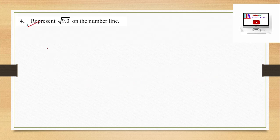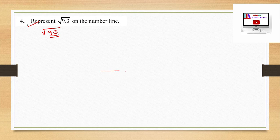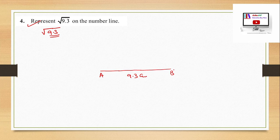Question 4: Represent √9.3 on the number line. Take a line of length 9.3 cm. Mark point A at one end and point B at the other. Extend the line by 1 cm from B to a new point C, so BC = 1 cm.